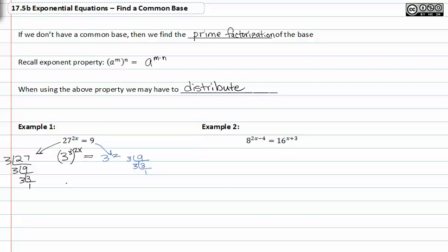Now that we've done that, we can rewrite the whole equation: (3^3)^(2x) = 3^2.